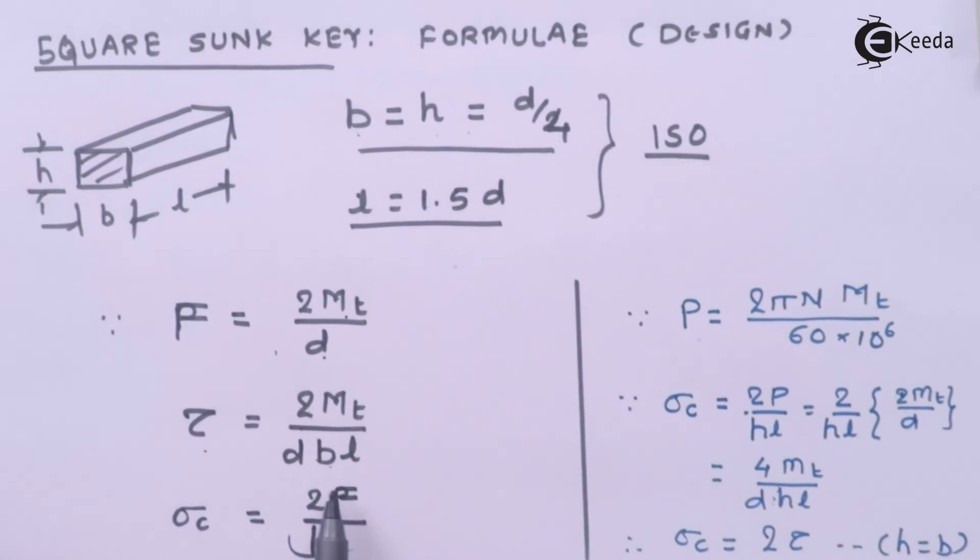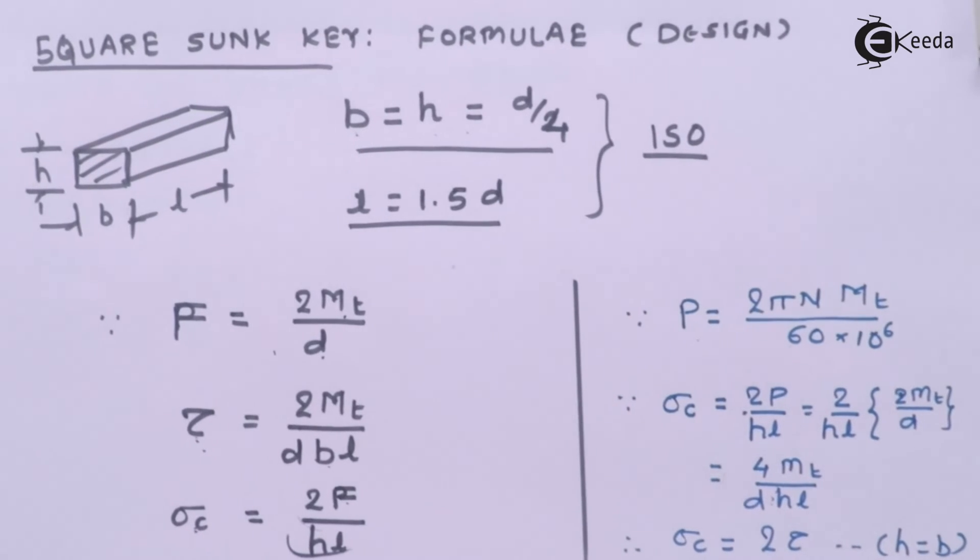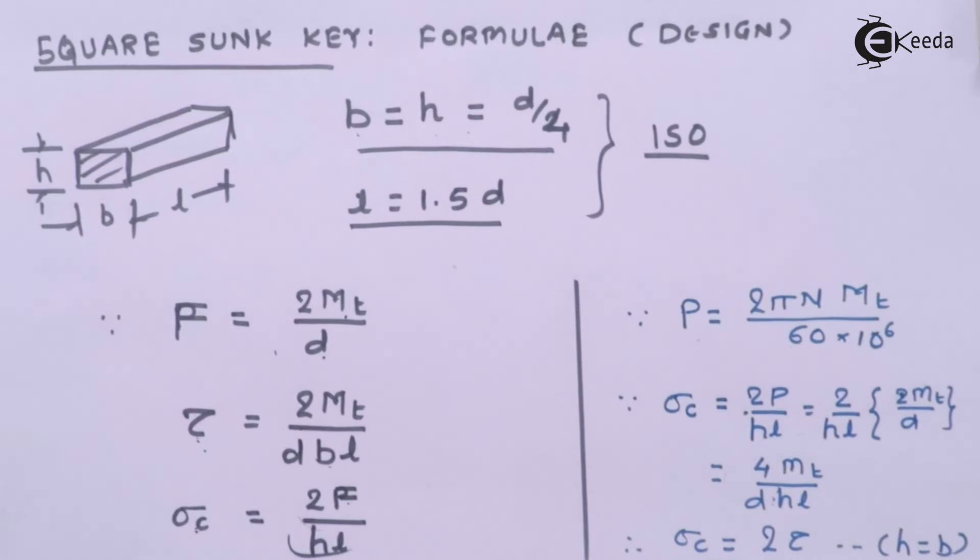It is also important to understand that power transmission is used by this formula. Compression, if I substitute this formula, the value of F back, I will get this particular formula. And as we compare the shear and the compressive stresses, we get this particular relation. So these are the important formulae that we can use in the analysis or in the design analysis of a square sunk key.